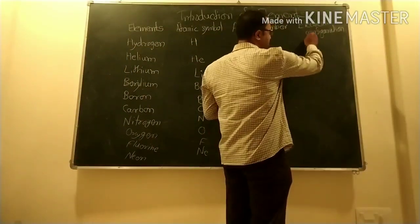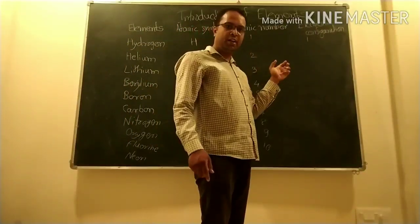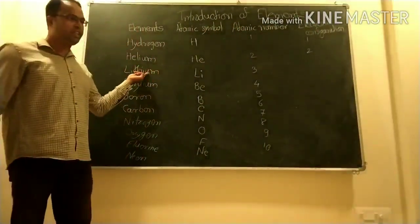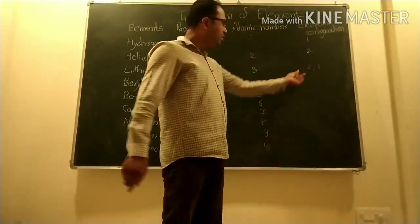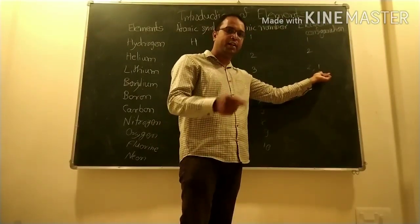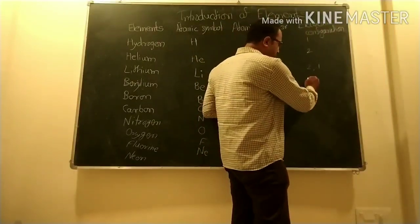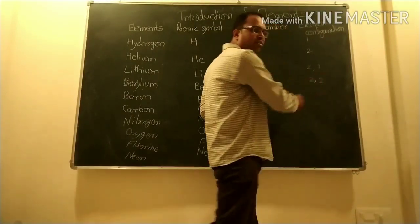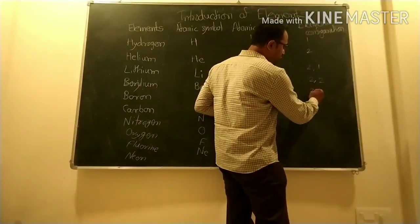The electronic configuration of Hydrogen is 1. For Helium, the number of electrons is 2, so its configuration is 2. For Lithium, atomic number is 3; the first shell contains 2 electrons and the third electron enters a new shell, giving configuration 2, 1. For Beryllium, atomic number is 4, giving configuration 2, 2. For Boron, atomic number is 5, giving configuration 2, 3.